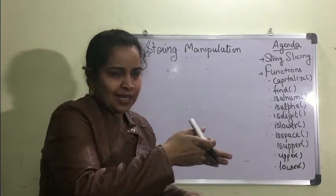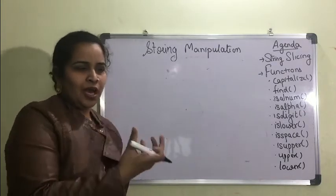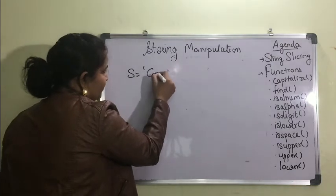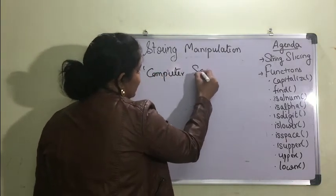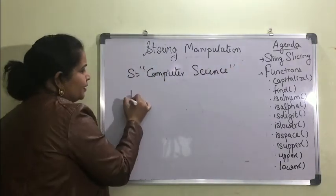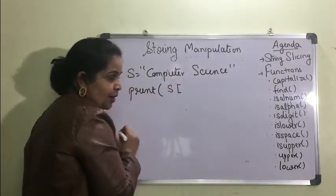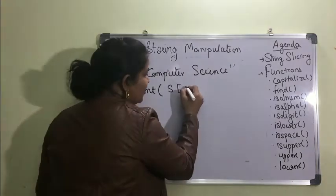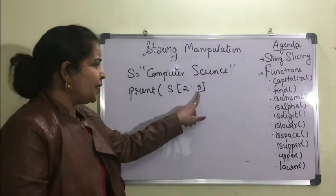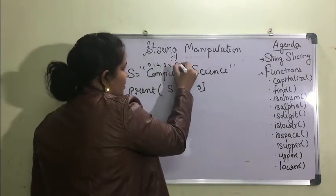Now we'll move to string slicing. Slicing means taking a piece from something — like cutting a slice from a brick of ice cream. Similarly, if we want to take a part of a string, it becomes string slicing. Suppose I have 'in computer science'. The slice is written as s[start:end] using square brackets, and the upper limit is exclusive.